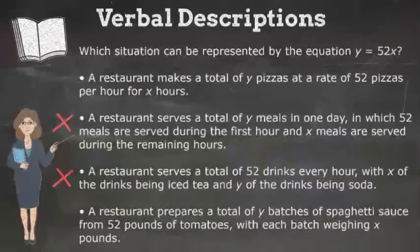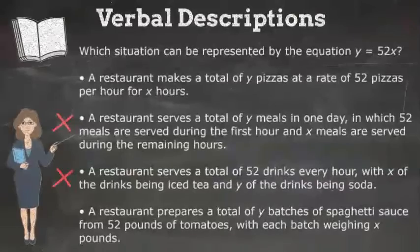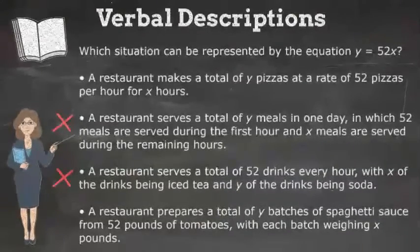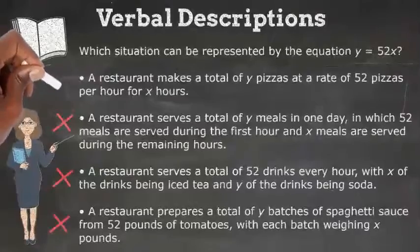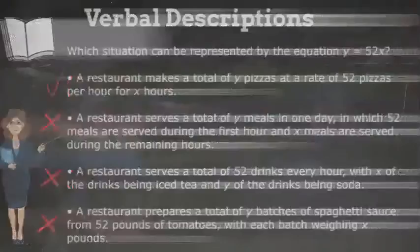The last one says, A restaurant prepares a total of y batches of spaghetti sauce from 52 pounds of tomatoes, with each batch weighing x pounds. Here, y batches weighing x pounds would be y times x, not 52 times x. So this answer choice is wrong too. So we can officially say the first answer choice is correct.